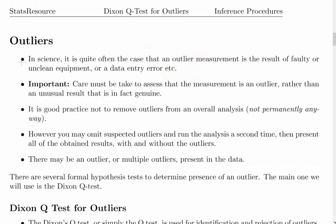Now the Dixon Q test is related to outliers. In science, it's quite often the case that an outlier measurement or unusual value is the result of faulty or unclean equipment or a data entry error. But care must be taken to assess that the measurement is an outlier rather than an unusual result that is in fact genuine. It's good practice not to remove outliers from an overall analysis permanently.